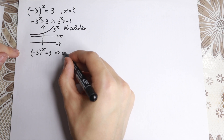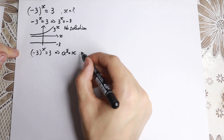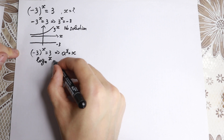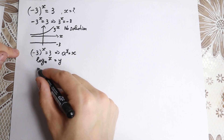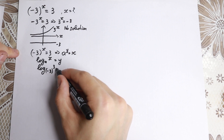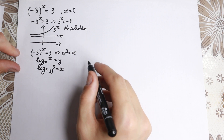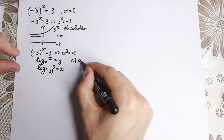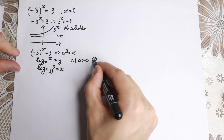This function looks like: a to the power y equals x, which we can write as log base a of x equals y. If we plug in our elements, we get log base (minus 3) of 3 equals x. Now, going back to the logarithm properties we learn in school, we need to know three properties. First, our base a must be positive — but our base is negative. So this rule does not work in our case.